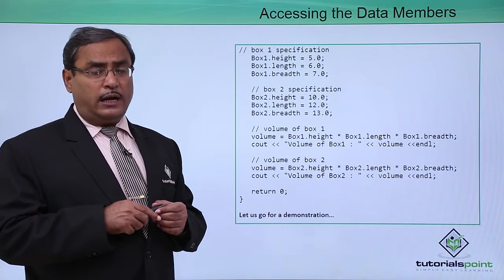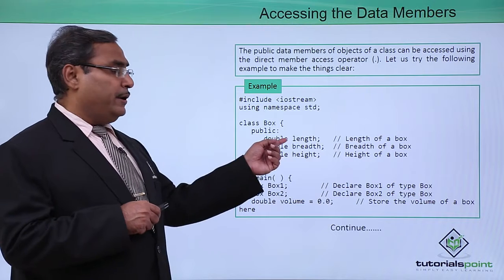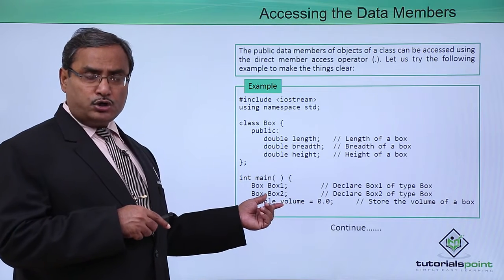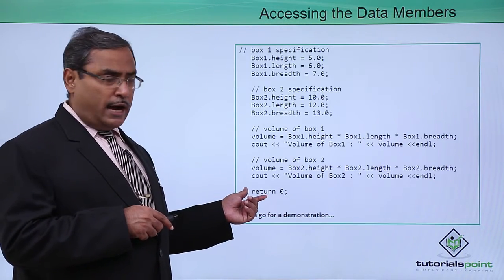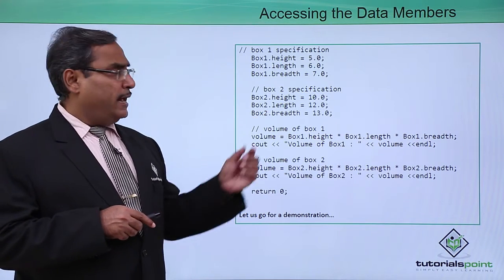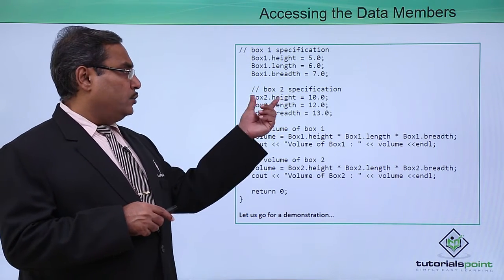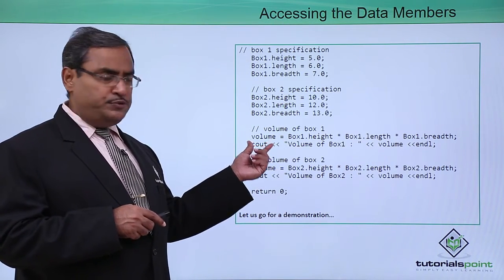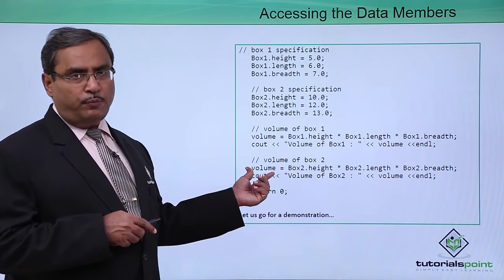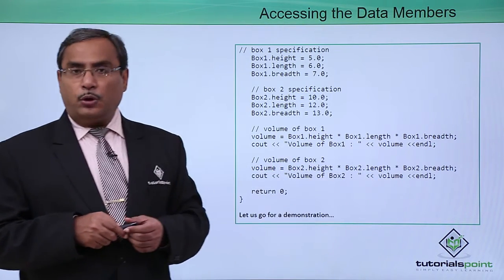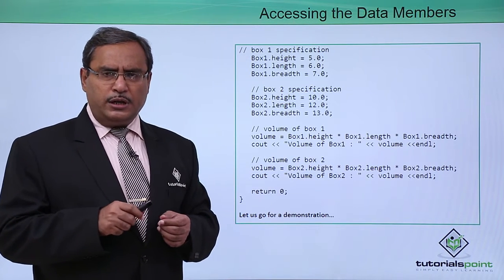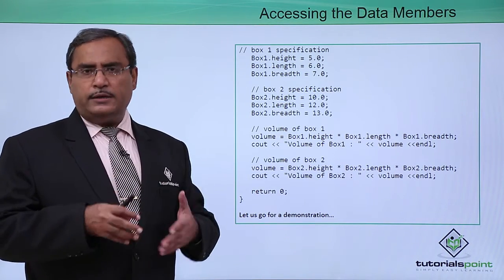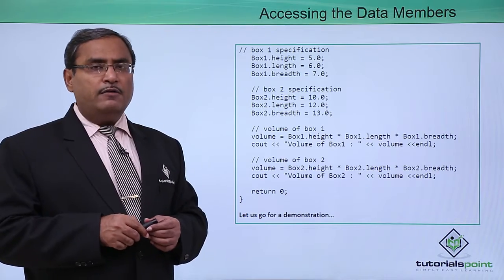So here we defined class box with three data members under the public section, declared two objects box1 and box2, initialized all data members using the dot operator, calculated the volume for both objects, and printed both volumes. For a better understanding, let us go for a practical demonstration where we will show the program code, compile it, run it, and discuss the topic again.